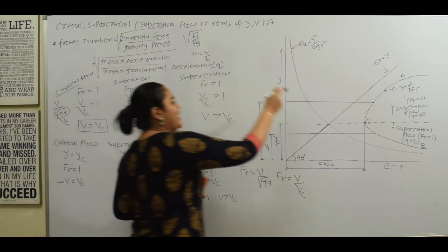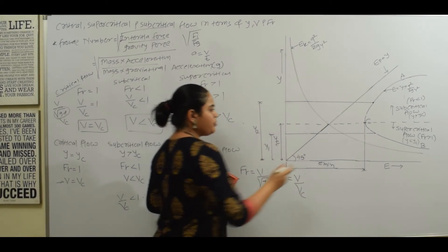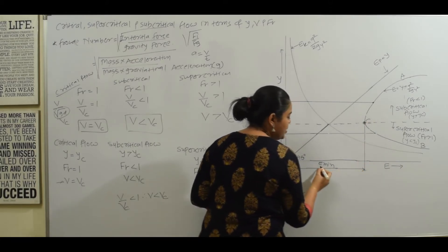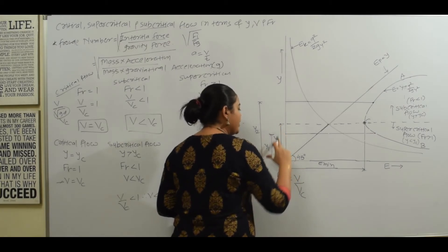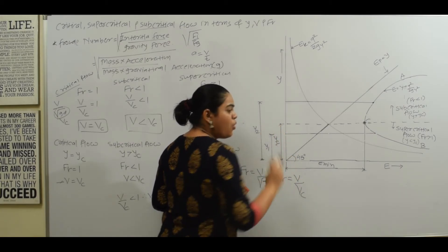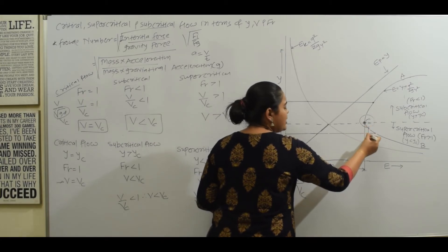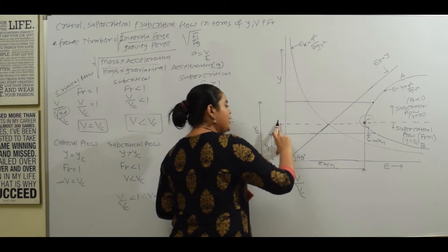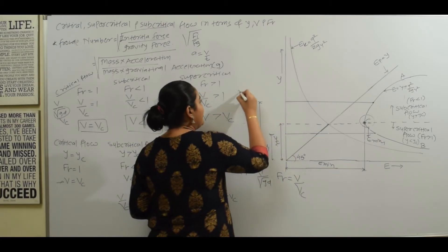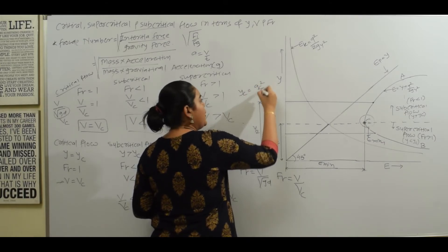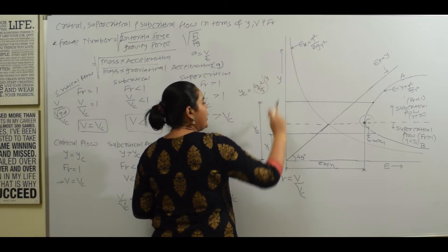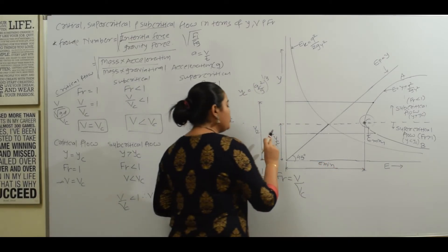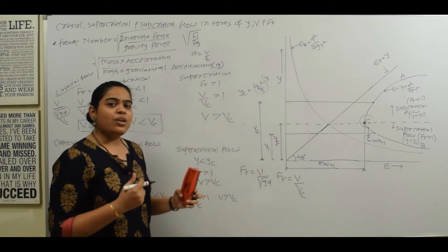Now, looking at the specific energy curve: there is a point on the curve where we get the minimum specific energy, and the corresponding depth is called the critical depth yc. The relation for critical depth is yc = (q²/g)^(1/3), where q is discharge per unit width. This is the depth at which specific energy is minimum.